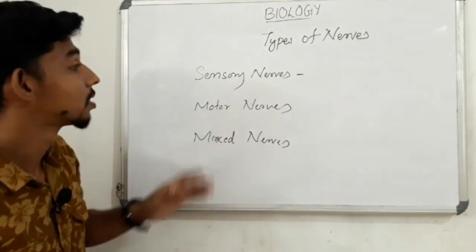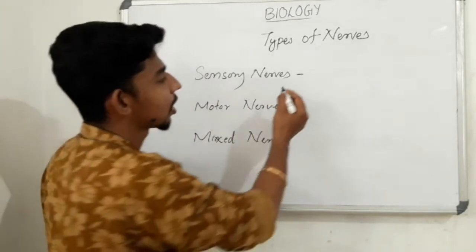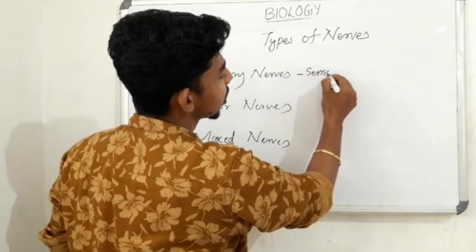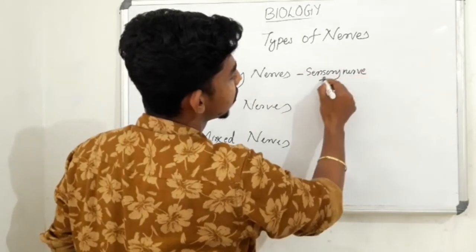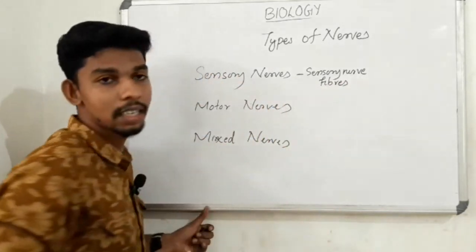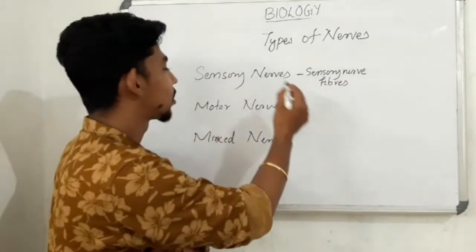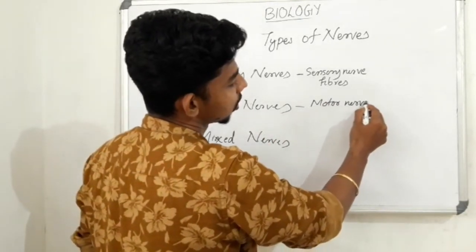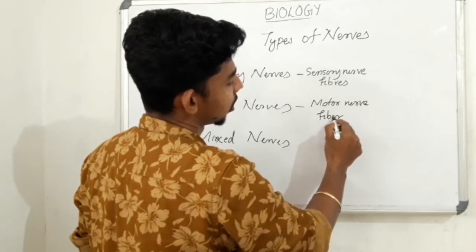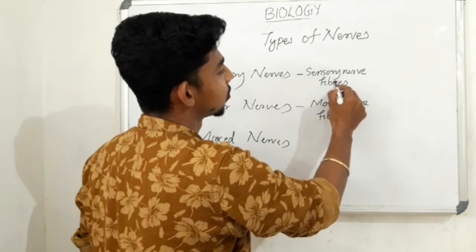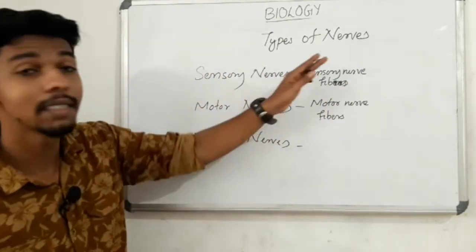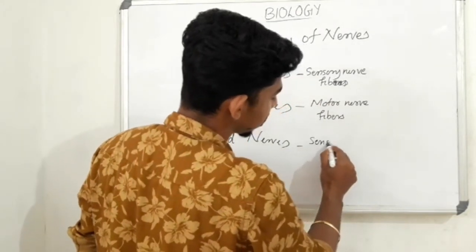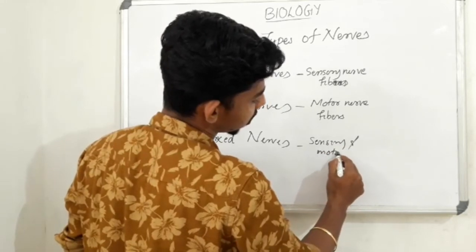Sensory nerves are formed of sensory nerve fibers. Motor nerves are formed of motor nerve fibers. Mixed nerves are formed of both sensory and motor nerve fibers.